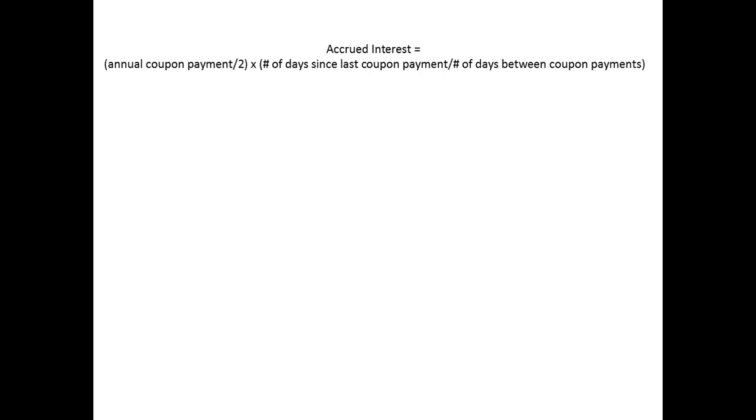The formula is shown here. Accrued interest equals annual coupon payments divided by 2 times the number of days since the last coupon payment divided by the number of days between coupon payments. If the coupon rate is 8%, then the semi-annual payments are $40. Since 30 days have passed and payments are made every 182 days, then the interest that the seller has accrued is $6.59.